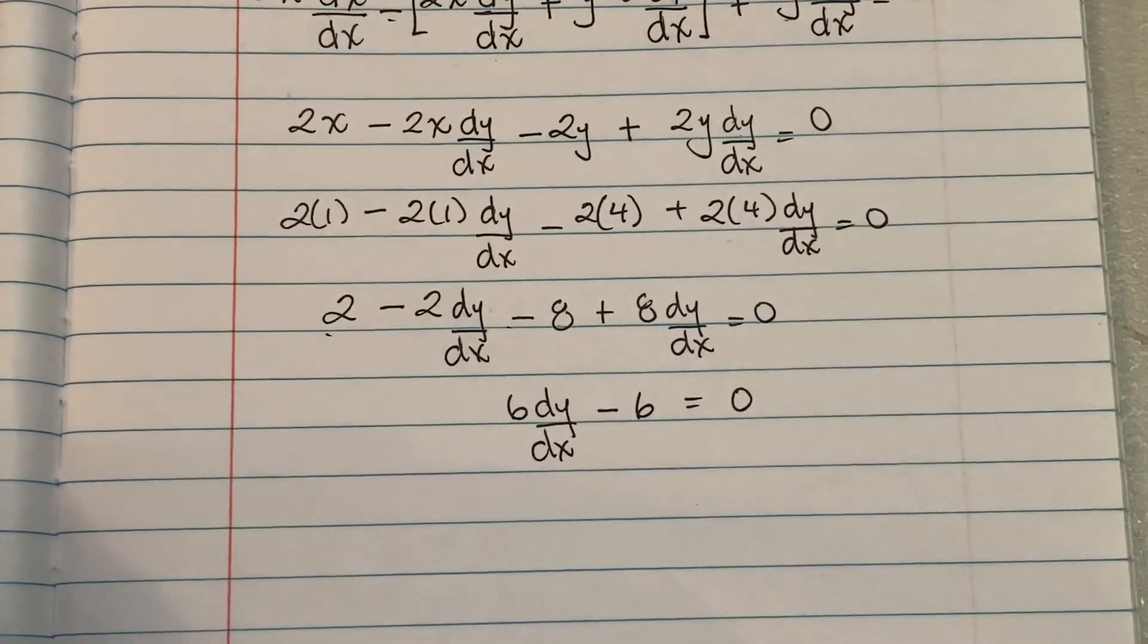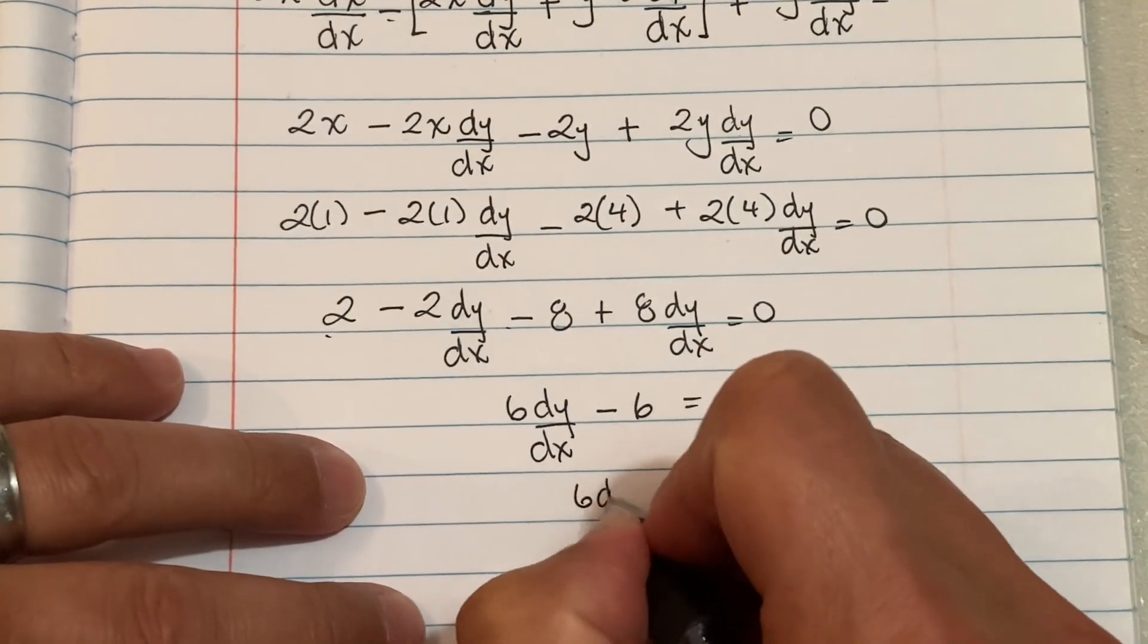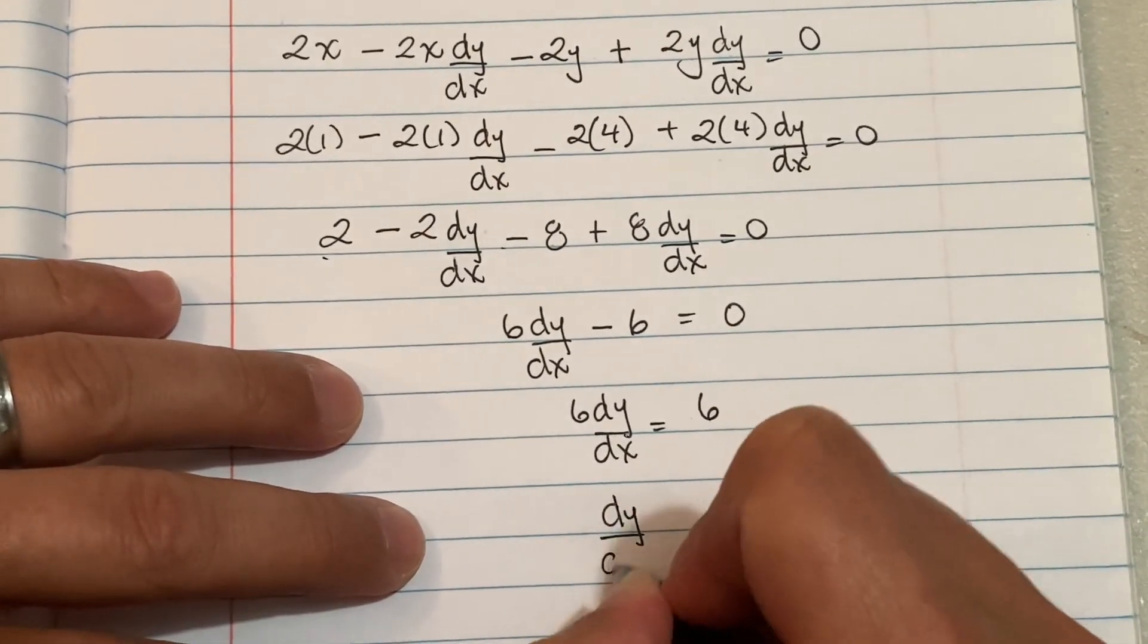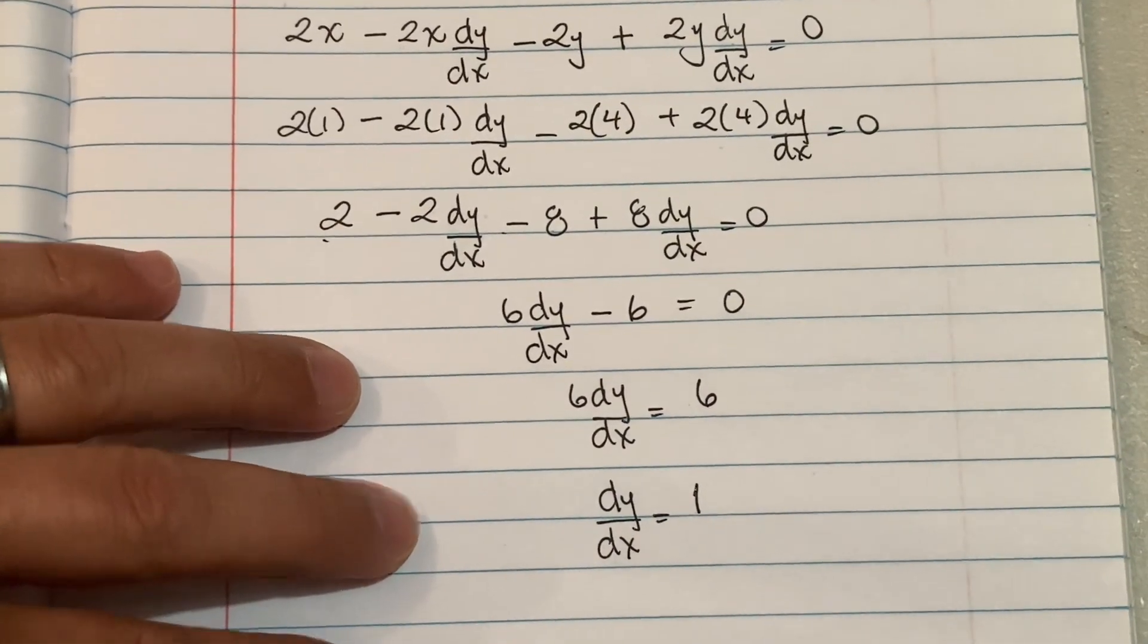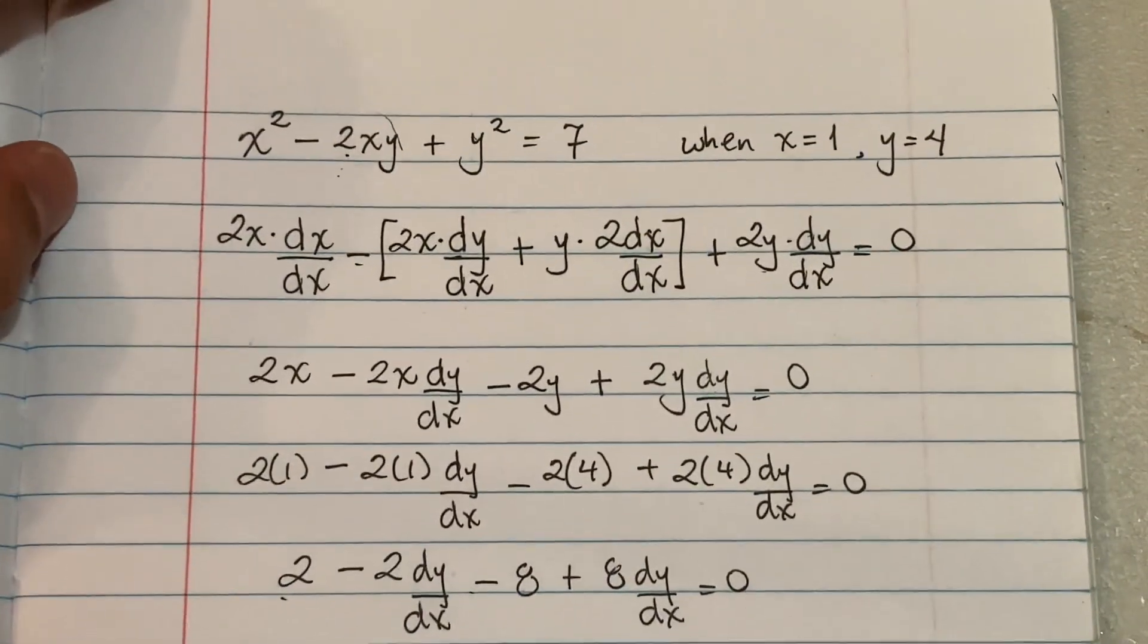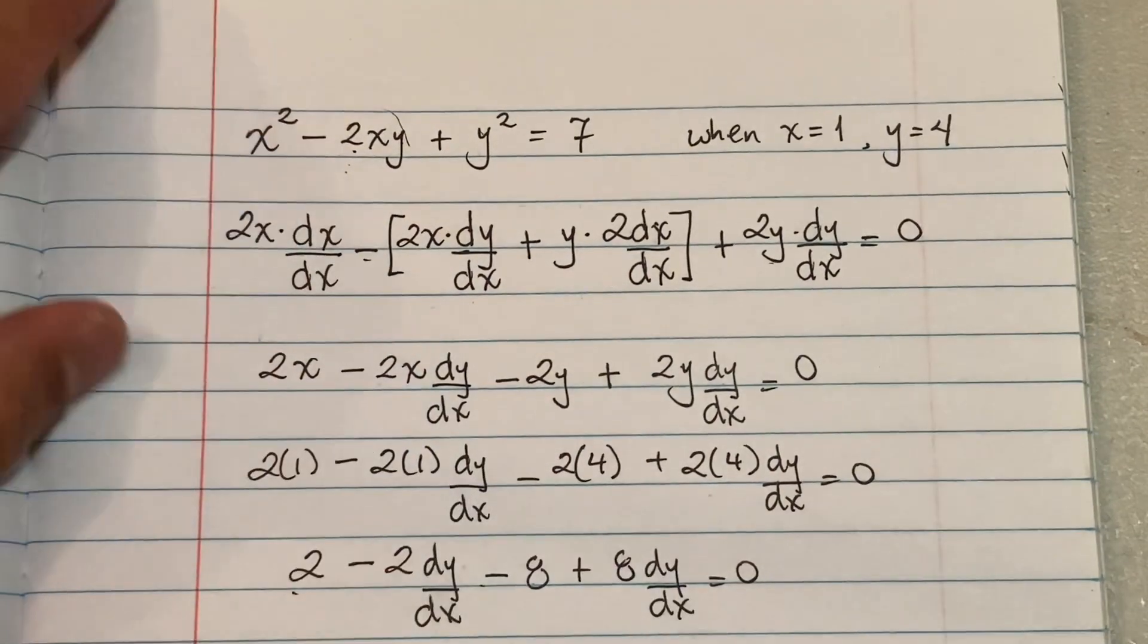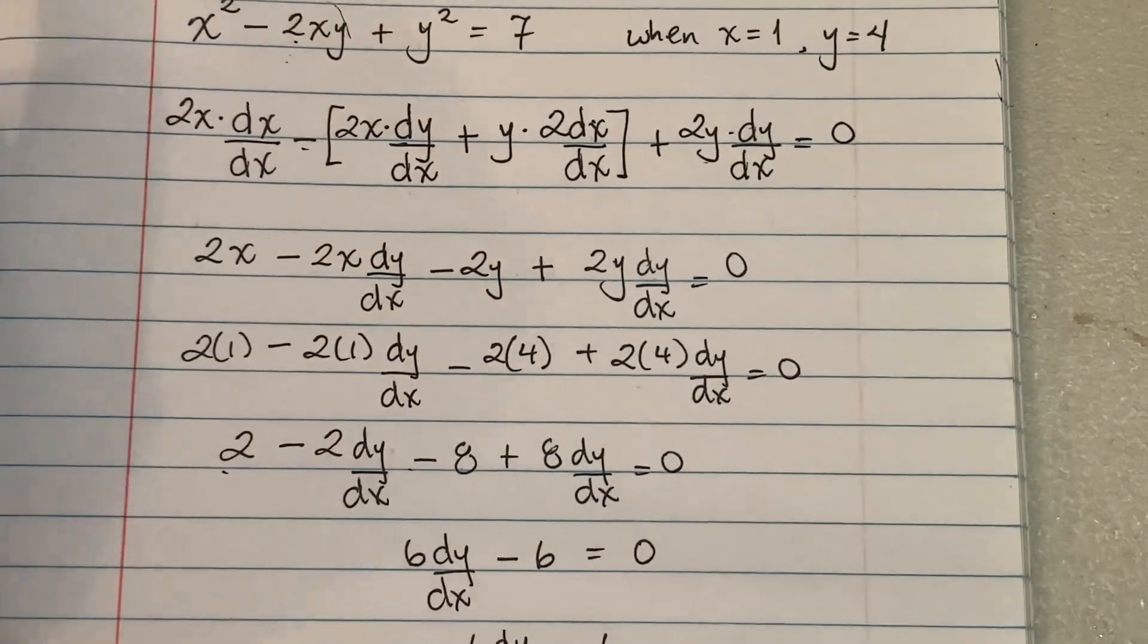You see how just plugging in the values cleared up a lot of stuff. Just bring it to the other side, so we're gonna have 6 dy/dx equals positive 6, and then after dividing we're gonna get dy/dx equals 1. And that's how easy it is guys. Just be careful, but on the AP exam you got to know your opponent—they're gonna give you this negative because so many times students make a mistake on that. Hopefully that helps clarify it and see you guys next time.